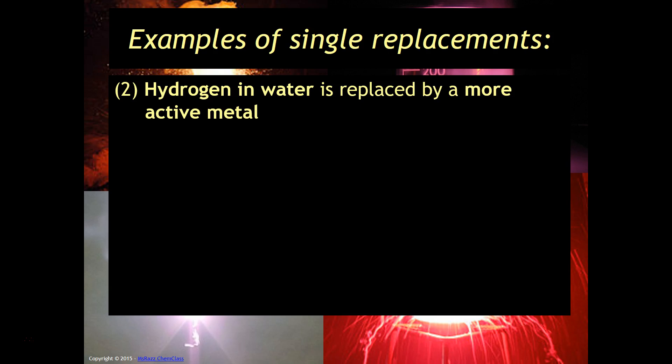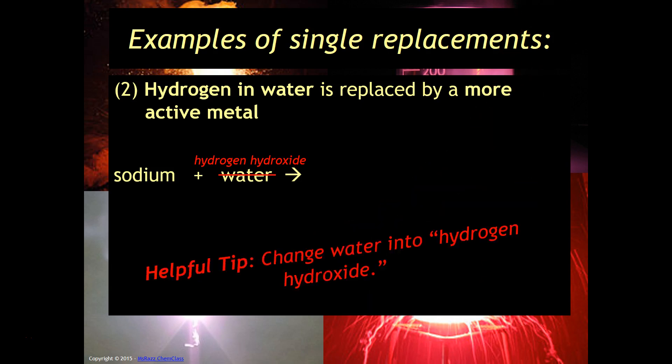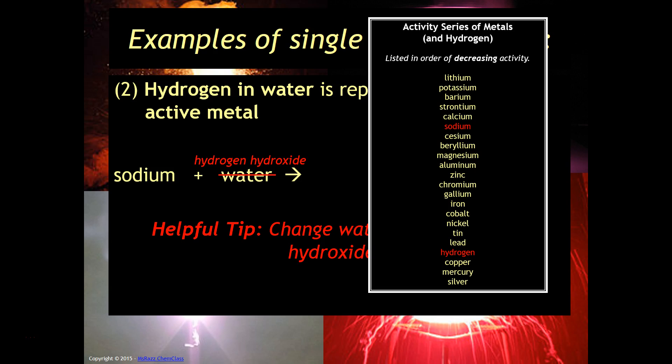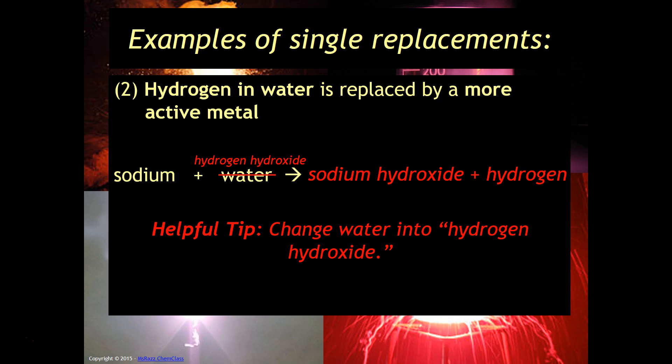Another example is hydrogen in water is replaced by a more active metal. So, for example, if you were to have sodium and water, you may say, well, I know water is a compound, but I don't know how we're going to figure out what's replacing what. So I recommend changing water into its special name called hydrogen hydroxide. Then when you do that, it's a lot more clear as far as what is going to replace what. You want to change water into hydrogen hydroxide. And then we can check to see, is the sodium more reactive than hydrogen? Because notice, this is the reactivity series of metals and hydrogen. So since sodium is more reactive than hydrogen, this reaction will occur. And so you will get sodium hydroxide plus hydrogen.